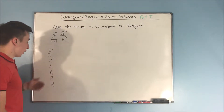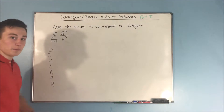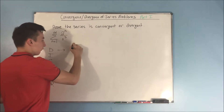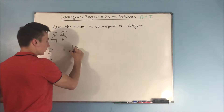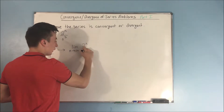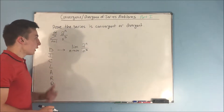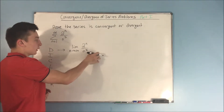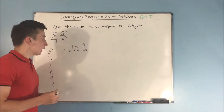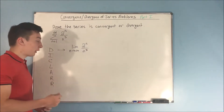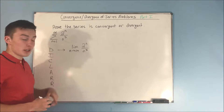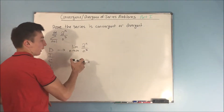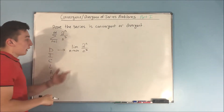So we go to the D in our checklist — the divergence test. We take the limit as n approaches infinity of 2 to the n over n cubed. Is this limit going to be 0? Well, n cubed is going to be larger than 2 to the n. If you put 5 in for n: 5 cubed is 125, and 2 to the 5th is only 32. So you can see this limit is going to equal 0.